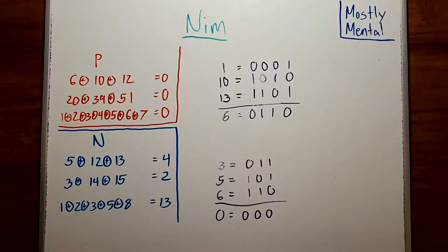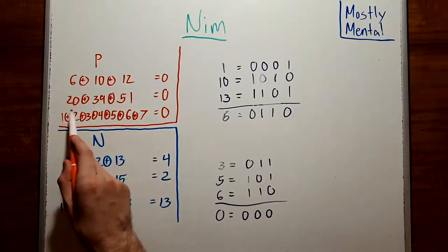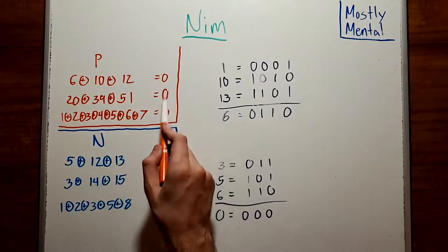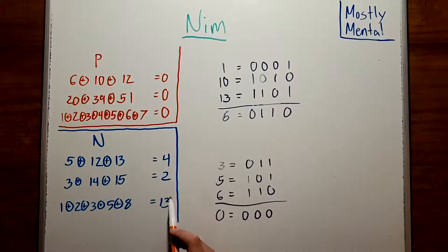Okay, that's all great, but how does any of it help us with NIM? Well, if we look at our P positions, we see that each has a NIM sum of zero. And all the N positions have NIM sums that aren't zero. Why does that happen?